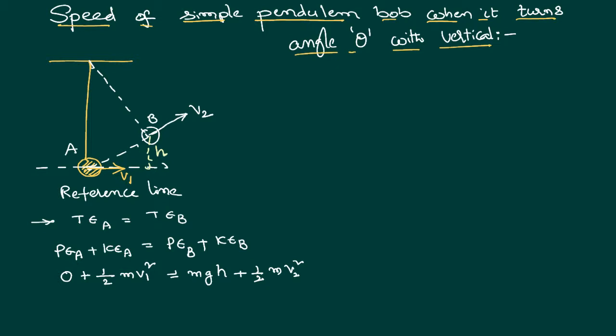So we can write half m V2 square as half m V1 square minus mgh. Being that m is common in all of them, we can cancel them. And we get an equation that V1 square by 2 equals gh plus V2 square by 2.